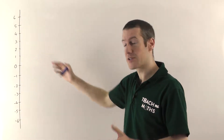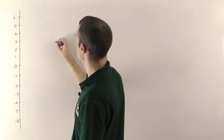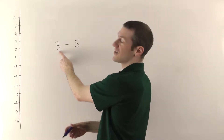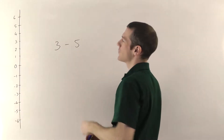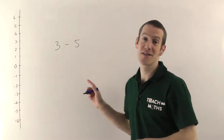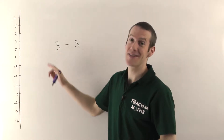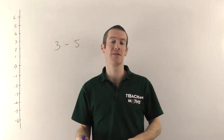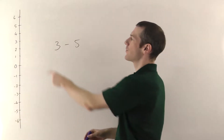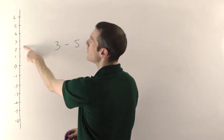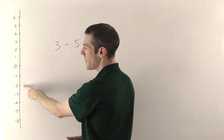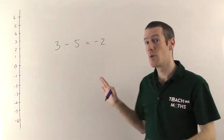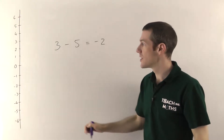We'll start with adding and subtracting. The concepts are very straightforward — you can just think about temperatures going up and down on a thermometer. For example, three minus five: you're starting off at three degrees and going down by five. When I took my son to school this morning the temperature was three degrees Celsius. If overnight the temperature goes down by five degrees, you go from three down to minus two. So three minus five is minus two.